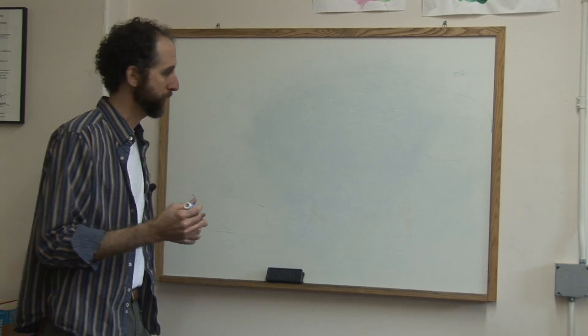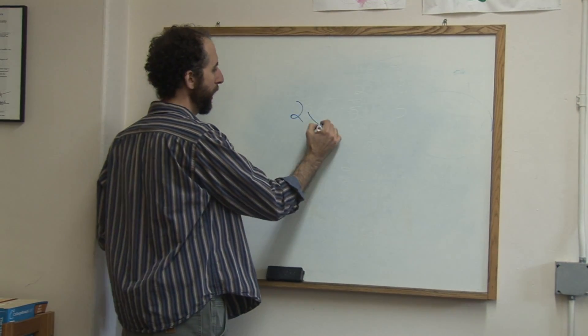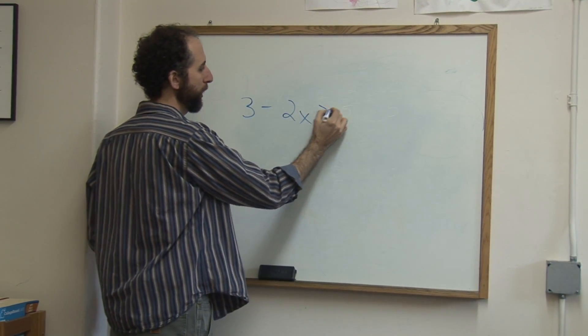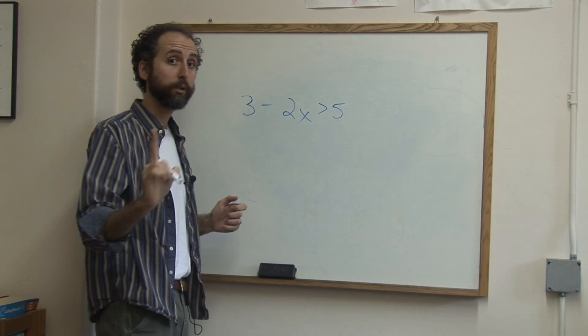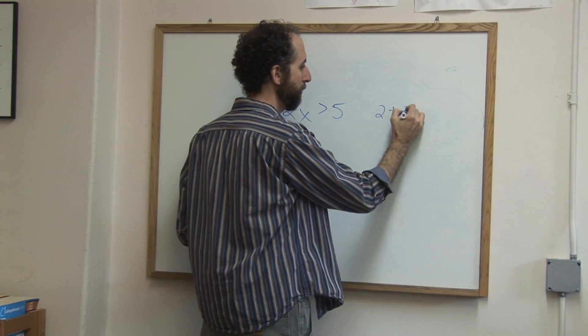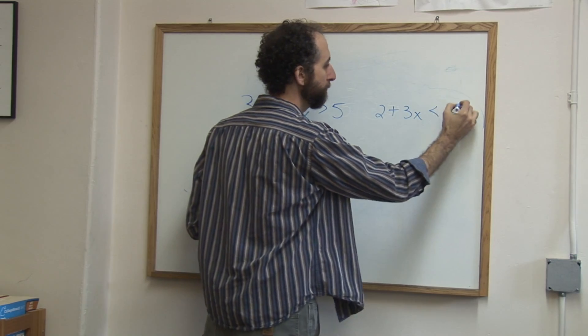Let's take a look at dividing inequalities. So let's say you have 3 minus 2x is greater than 5. And let's take a look at two at the same time, this one and also 2 plus 3x is less than 4.